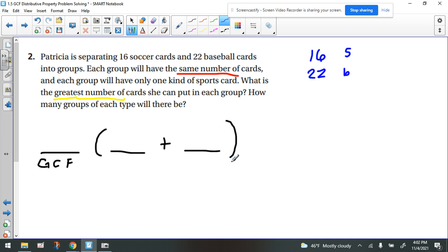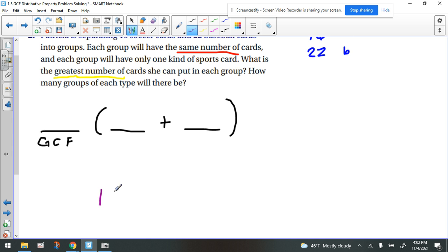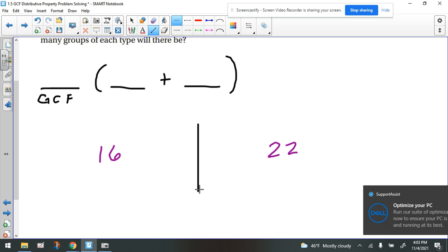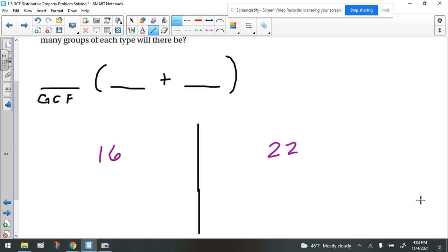We do need to find the GCF of these two numbers, and how would we do that? In class we've been talking about using prime factorization. Let's write these numbers down and start our factor tree. We have the number 16, and we have the number 22. We always like to draw a line to separate our workspace.